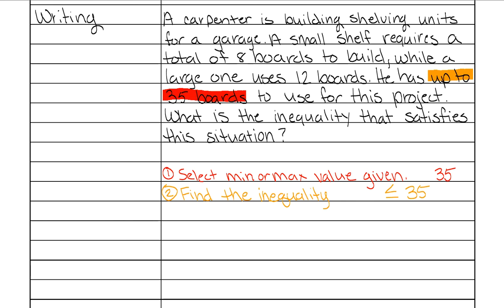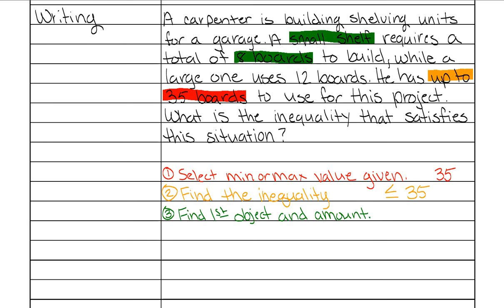The third step is to find the first object and the amount of that object. In this case, we're looking at the small shelf. A small shelf requires eight boards, so for every small shelf you're using eight boards — you're multiplying. You come up with a variable for the small shelf; in this case I'm just going to use S. So that gives us 8S.